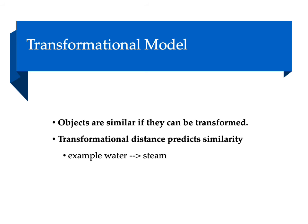The final model is the transformational model — objects are similar if one can be transformed into the other. The more steps required to transform one thing into another, the less similar they are. If it takes one step to transform something, those things are more similar than if it takes three or four steps. The number of transformation steps correlates with how similar something is.